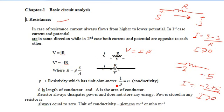This unit is ohm-meter. Rho is resistivity, sigma is conductivity. We have already studied this in class 12. Where L is the length of conductor, A is the area. Resistance always dissipates power and does not store any energy.